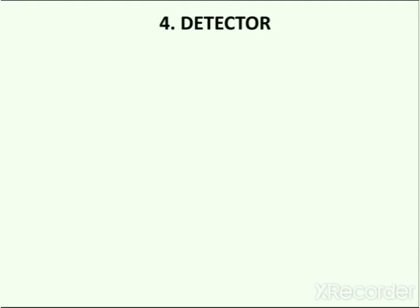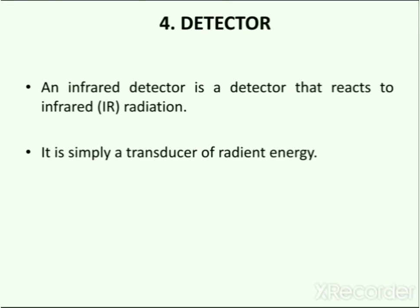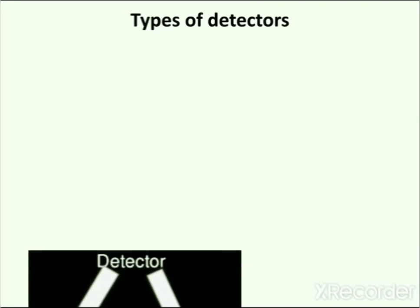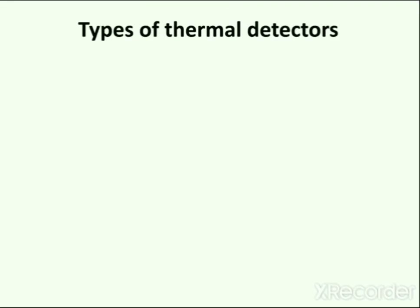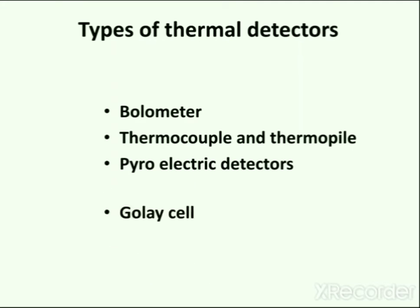The next important part of the IR instrument is the detector. An infrared detector reacts to infrared radiation and is simply a transducer of radiant energy — an electronic device that converts energy from one form to another. There are two types of detectors used in IR spectrophotometers: thermal and non-thermal detectors. Types of thermal detectors include the bolometer, thermocouple and thermopile, pyroelectric detectors, and the Golay cell.